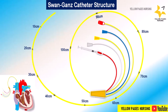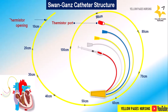The end at 100 centimeters is highlighted with two thick lines. Next is the thermistor. The pulmonary artery catheter has a thermistor device approximately three to five centimeters from the tip. The thermistor measures temperature and allows calculation of cardiac output by the thermodilution technique.